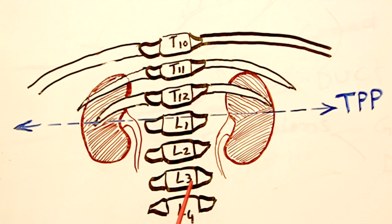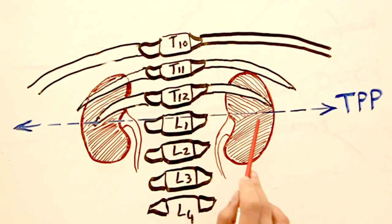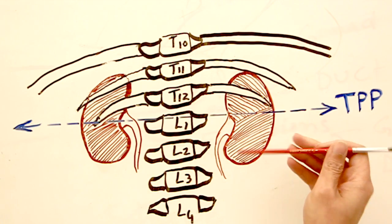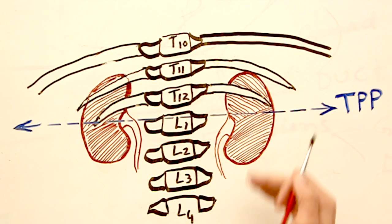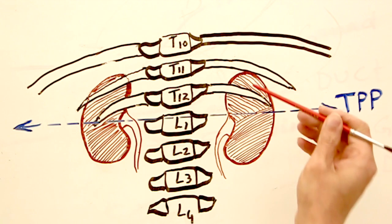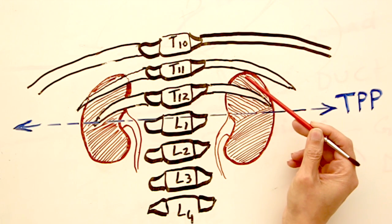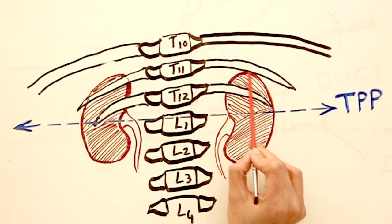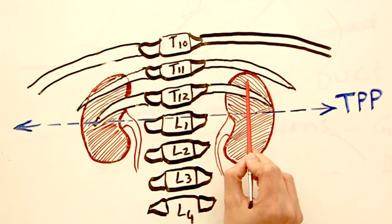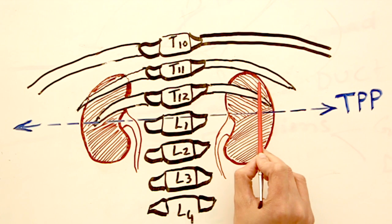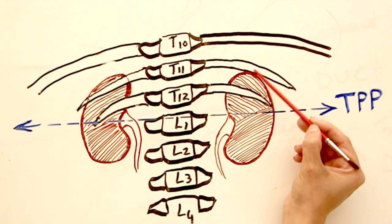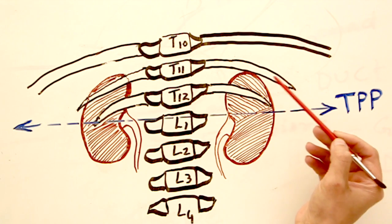First, the right kidney is at a lower level. Why? Because the liver is forcing it to stay at a lower level, as the liver occupies the majority of the right hypochondrium or right side of the abdominal cavity. The upper pole or superior pole of the right kidney is just touching the 11th rib. The 11th rib is not covering the kidney entirely.